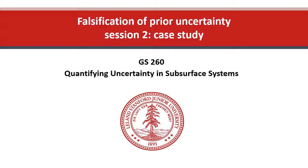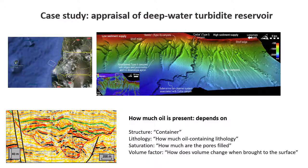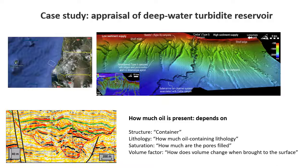Now that we've covered a broad overview of falsification of prior uncertainty, we're ready to do a substantial case study. This case study involves an offshore turbidite reservoir. We're at the stage of the appraisal of that reservoir. That means by means of seismic and well data, we'd like to know how much oil in place we have.